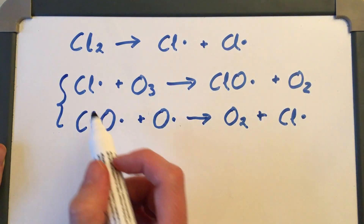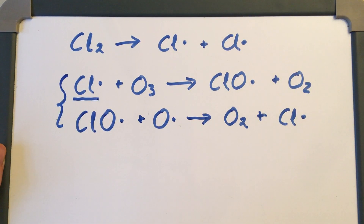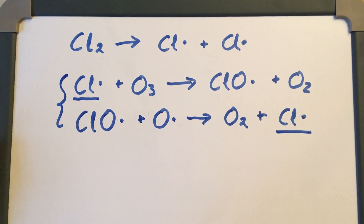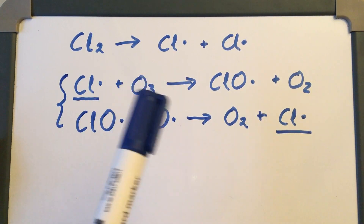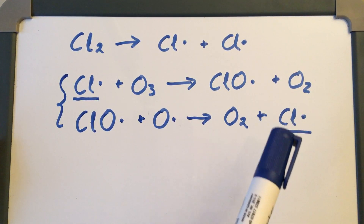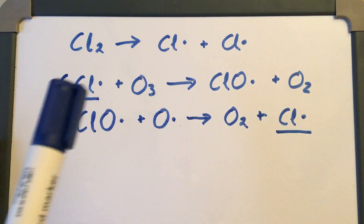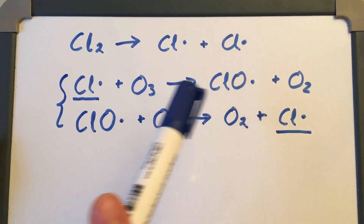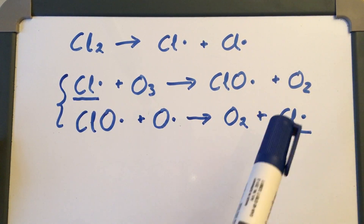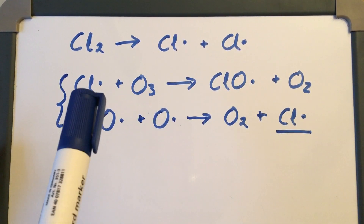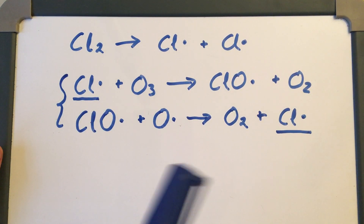The first way to show chlorine is a catalyst is to look at these two reactions. You can see that chlorine is used in the first reaction but it's produced in the second reaction. So the chlorine radical used to react with the ozone is then produced again at the end of the second reaction. The chlorine radicals are not used up — they go on to react with more ozone repeatedly. That's why we know chlorine is catalysing it.